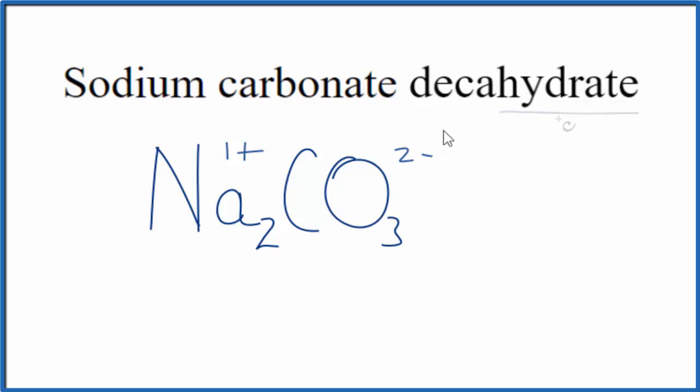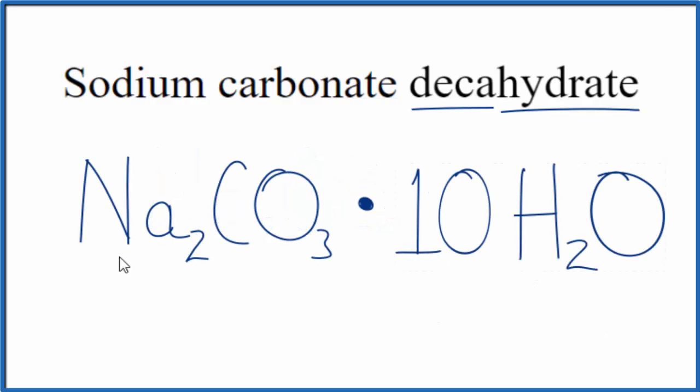Let's remove these symbols here. When we see hydrate, we think of hydration, having drank enough water. Then we have the deca. Deca means 10. So this means we have 10 water molecules around the sodium carbonate. So we write a dot to show that they're around the sodium carbonate, then we write 10H2O.